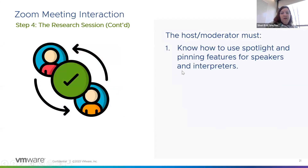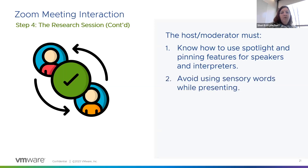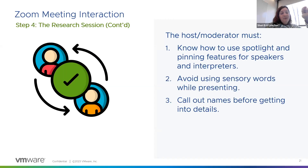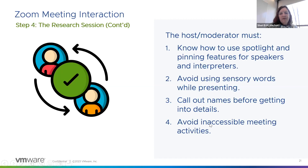As the host or moderator in terms of Zoom interaction, you have to know how to use the spotlight and pinning features because you may have a sign language interpreter on your call — figure it out before the call, not during. Avoid sensory words like up, down, left, right during presentations — somebody with dyslexia might not be able to follow those. Make sure you mention people's names before going into details, because Zoom captions do not yet identify the speaker. Help people follow along by saying who's speaking before you start talking. Make sure you provide enough time for speakers — you don't want people with anxiety or a speech disorder to feel under pressure, as that tends to worsen symptoms.